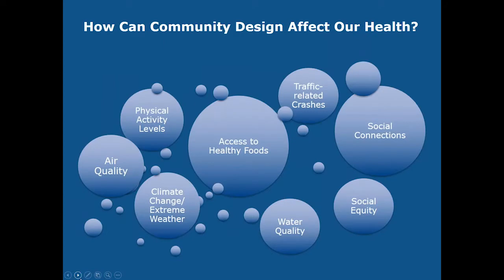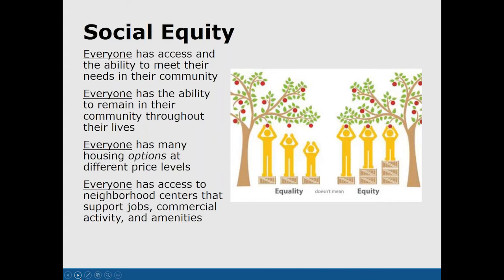Healthy community design focuses on making the healthy choice the easy choice for our residents. We can see a lot of ways that healthy communities are affected by the work we do in planning, from transportation to air quality to access to healthy foods. Social equity is another key element, particularly pertinent when discussing substance abuse and the opioid epidemic. Equality treats everyone equally regardless of differences, while equity provides resources to achieve the same results for everyone, taking into account differences in age or population.